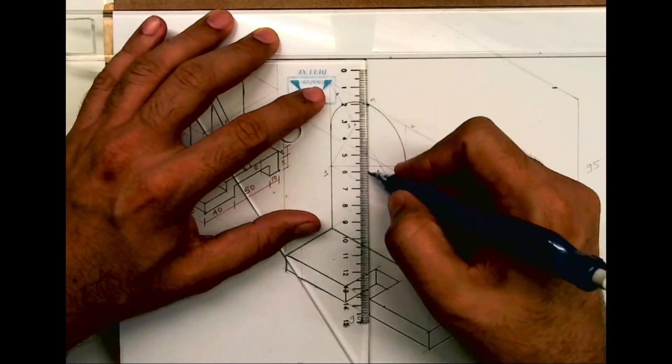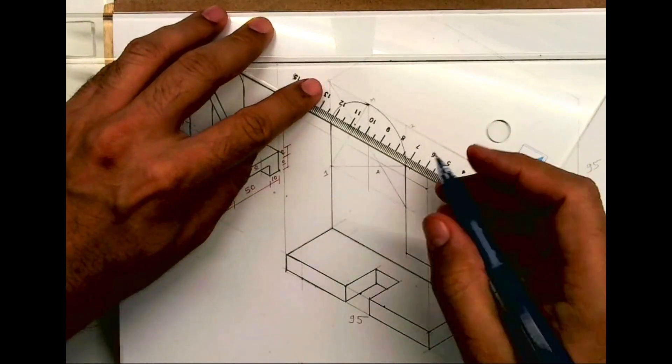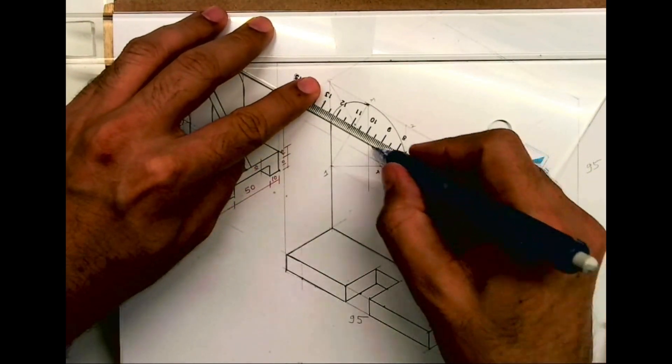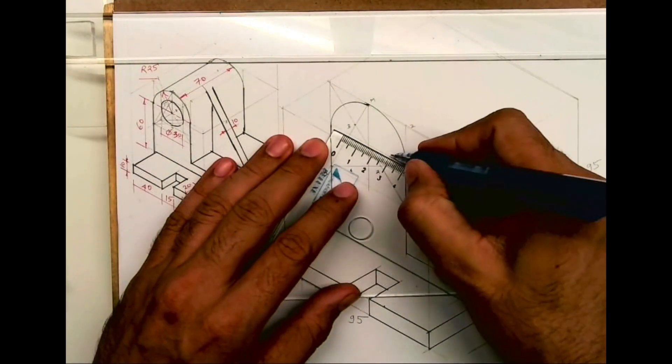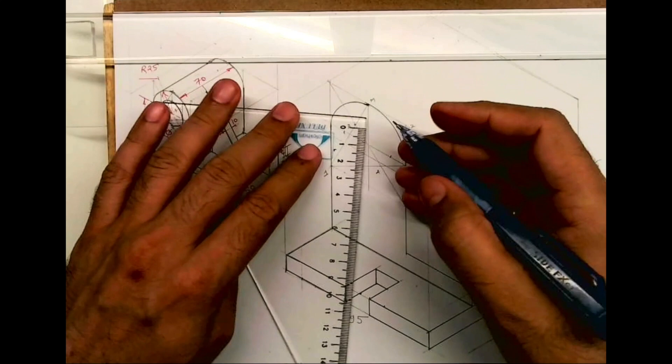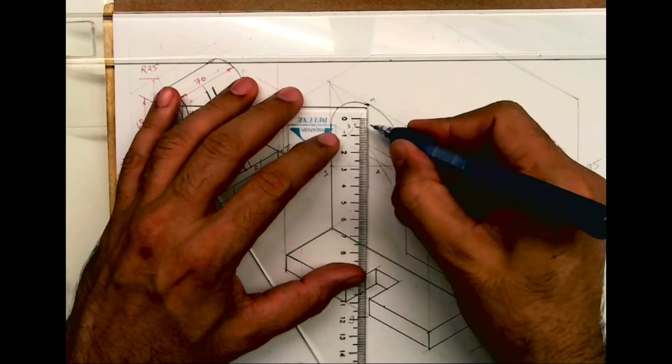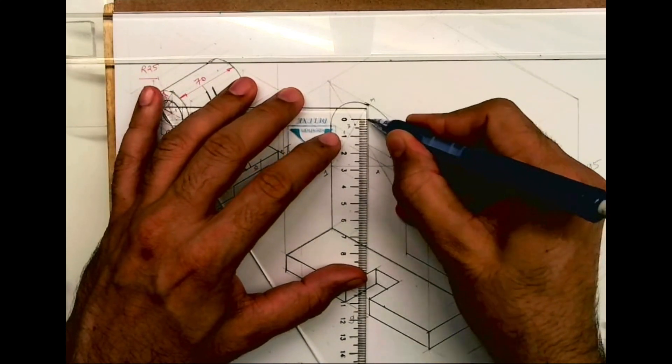Now what we'll do, we'll extend vertical line from midpoint and again draw parallel line from M, so we'll get the center point. And now from that center point again we'll take 15, 15, 15, 15 on all four sides to draw inner circle.